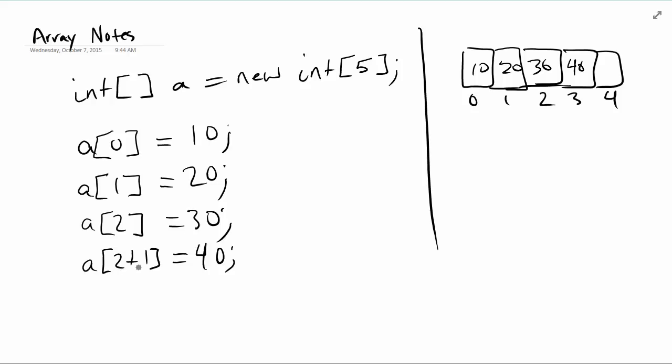Another example is we can use values stored in variables. For example, we can use the length of this array, so a.length which is 5 minus 1, to access the last element in the array at index 4 because we're indexed from 0. We'll say its value is 50.